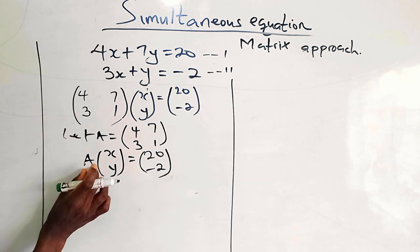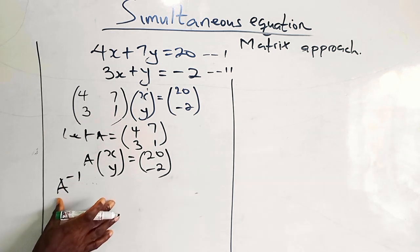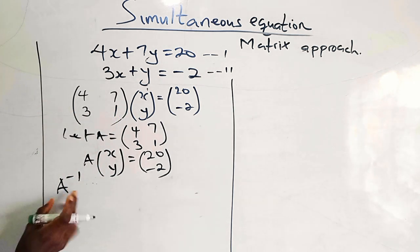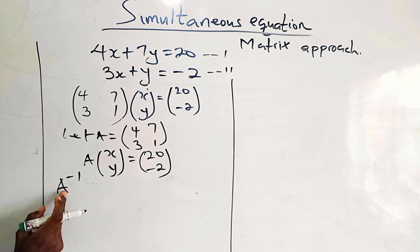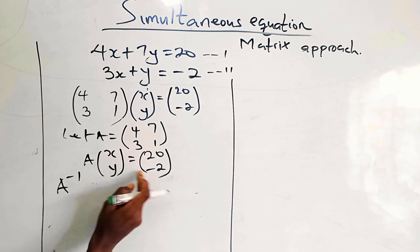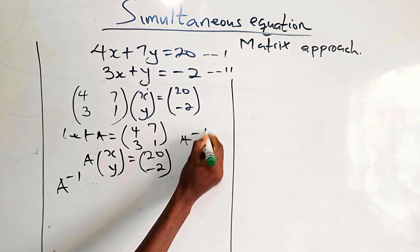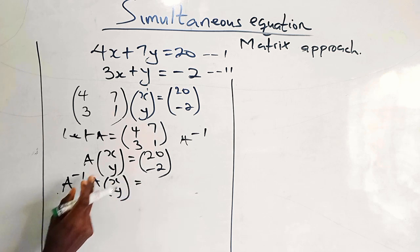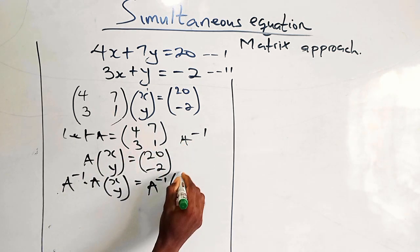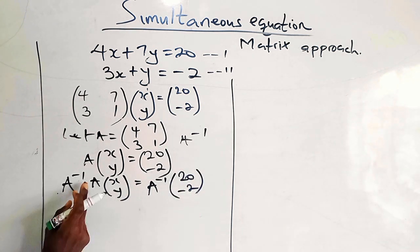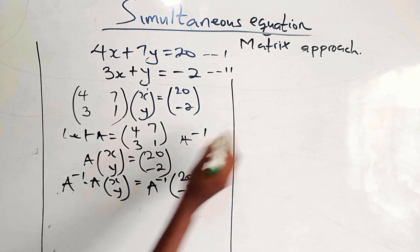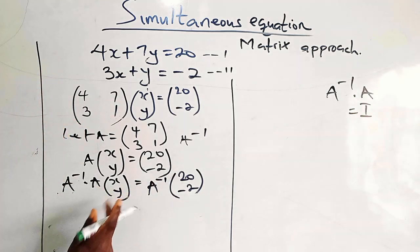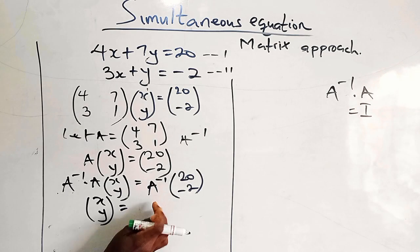The next thing is for us to find the inverse of matrix A. To determine the inverse, we have to know the determinant of this matrix. Do not forget — this inverse we are about to find, we are going to use it to multiply both sides of the equation. So we multiply both sides by inverse of A. Inverse of A times A gives the identity matrix, so that drops out, leaving x, y equals inverse of A times [20, minus 2].